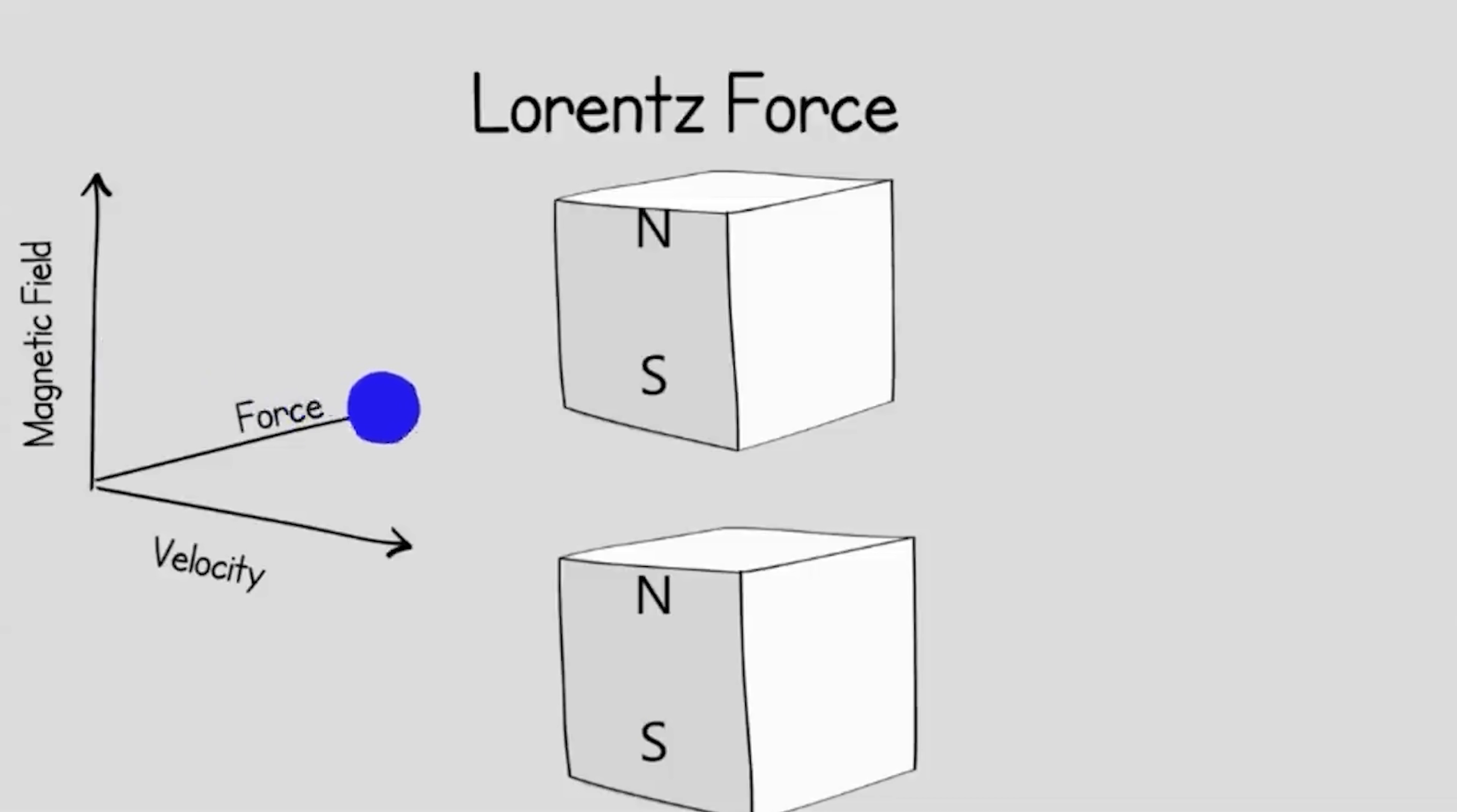Whenever you move an electric charge through a magnetic field, it causes that electric charge to curve. And you can make use of that. In fact, that's the way that modern motors work. Electric motors work by passing current through a wire that's in a magnetic field and it causes a force on that wire.